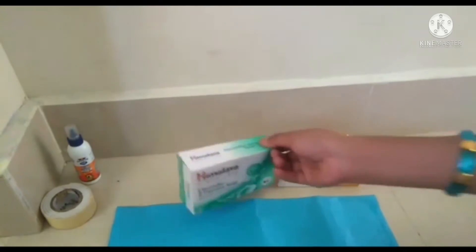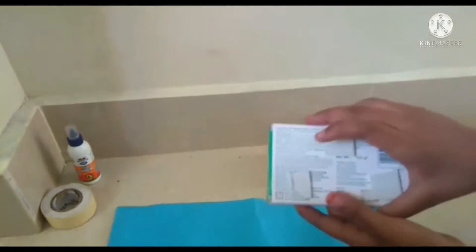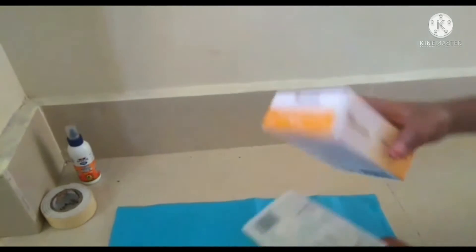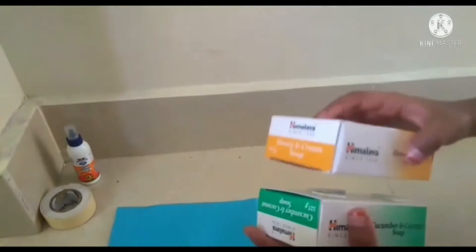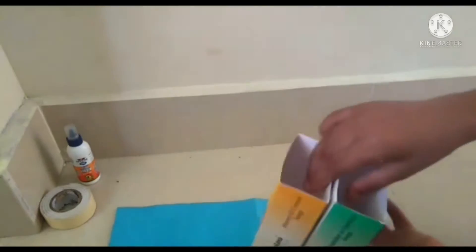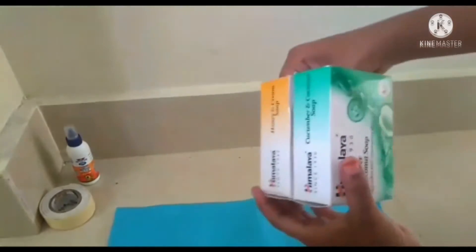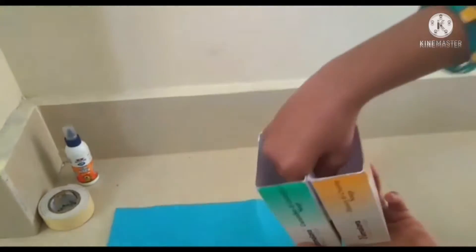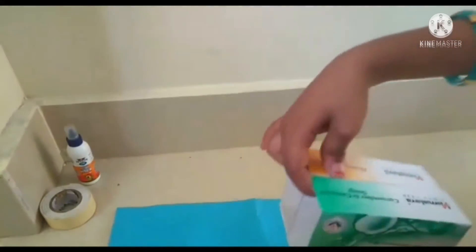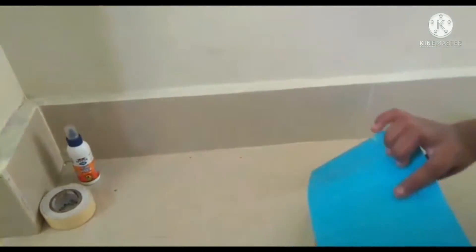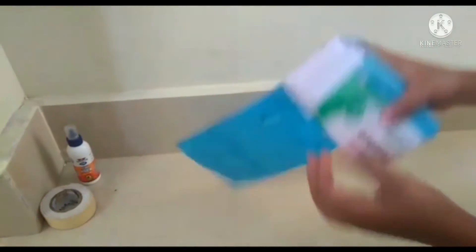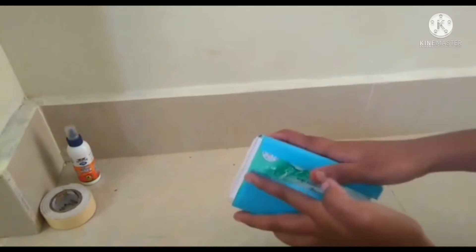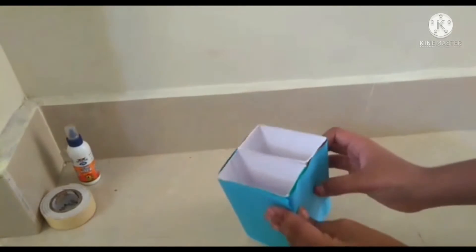Now we are going to add double-sided tape. We'll use the soap boxes and apply glue to the color paper to cover the soap boxes completely.